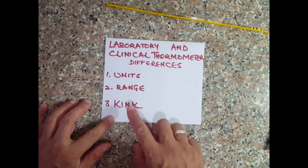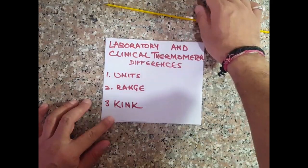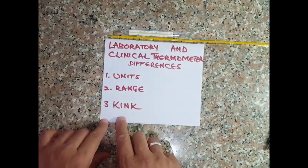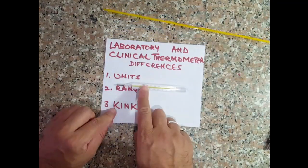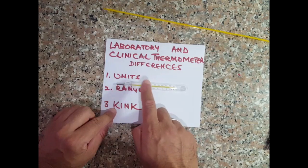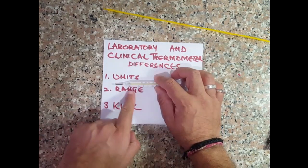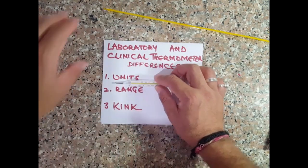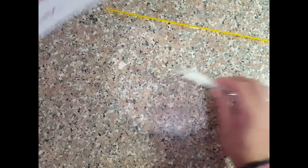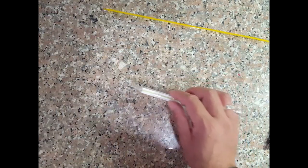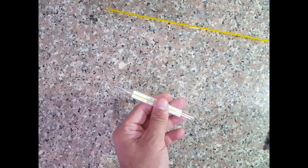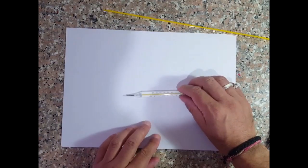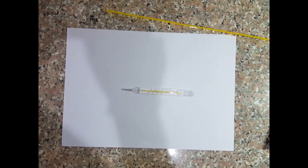In this video, we will learn about the third difference between the two thermometers, and that difference is called the kink. What is a kink? Let me show you. Kink is only found in a clinical thermometer. I'll have to remove this paper to show you the kink closely. Let me get a white sheet and place the thermometer on it, then zoom in and show you the kink.